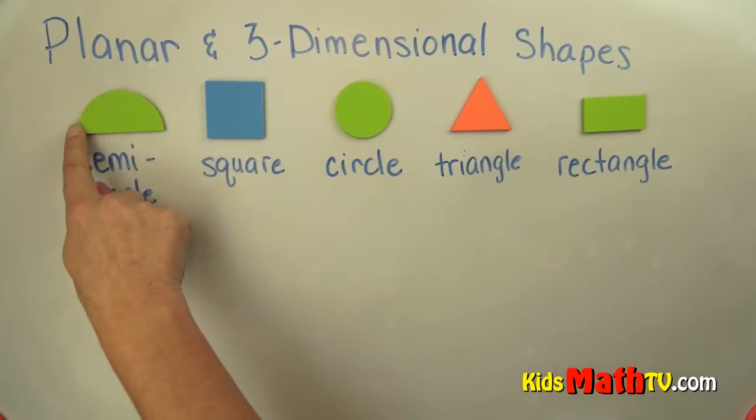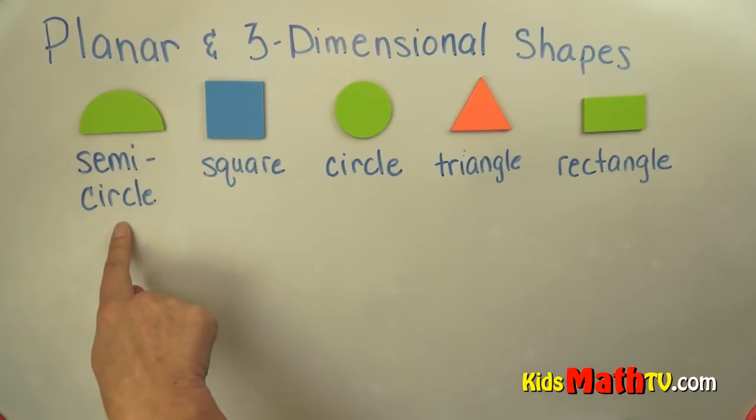This is a semi-circle, it's part of or half of a circle. This is a square, all the sides are the same length.